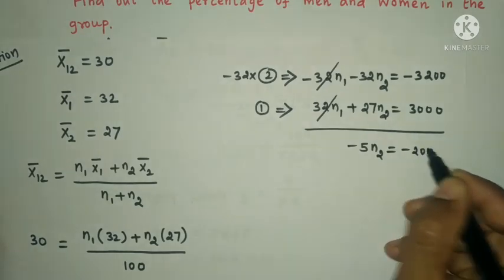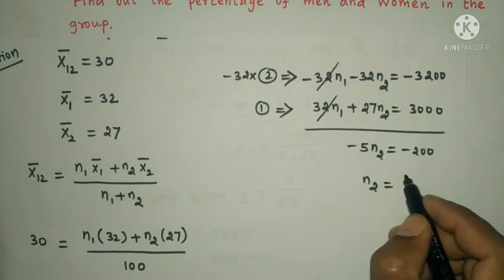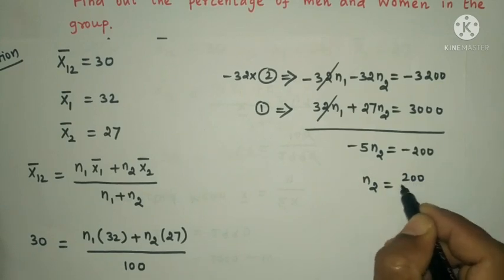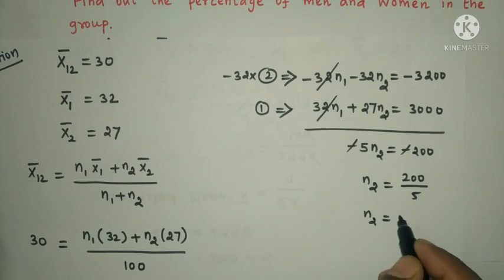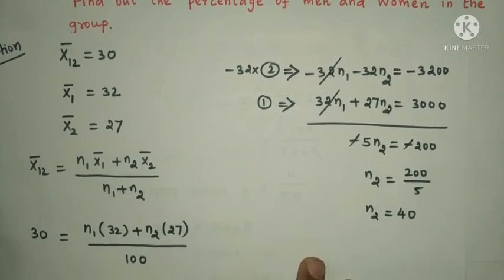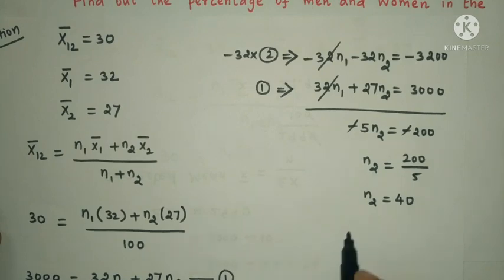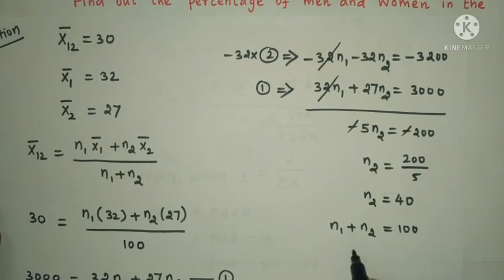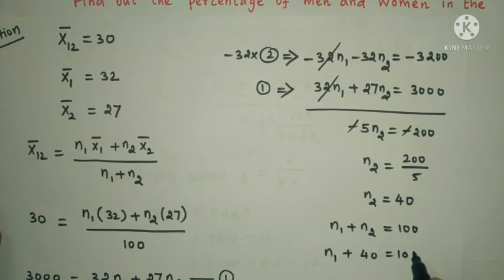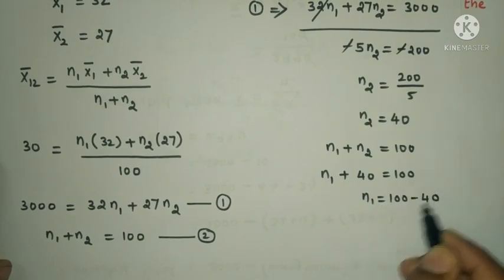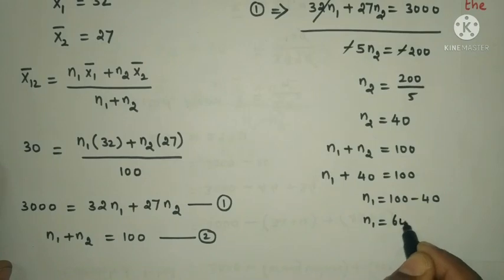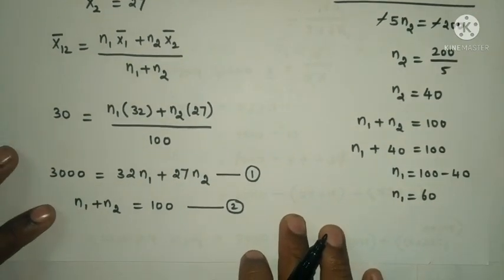So n₂ = 200 / 5 = 40. Then n₁ = 100 − 40 = 60.